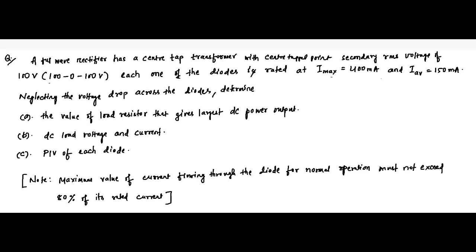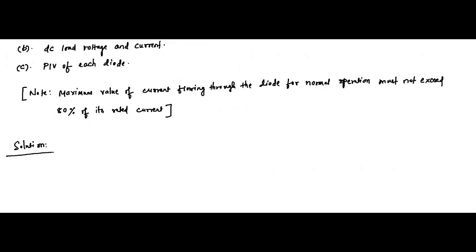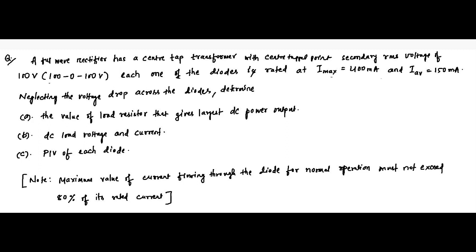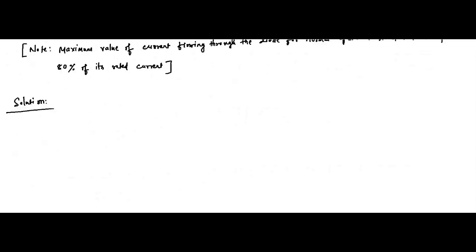We have to determine the value of the load resistor that gives the largest DC power output, the DC load voltage and current, and the peak inverse voltage for each diode. An extra note: the maximum value of the current flowing through the diode for normal operation must not exceed 80% of its rated current of 400 milliampere.